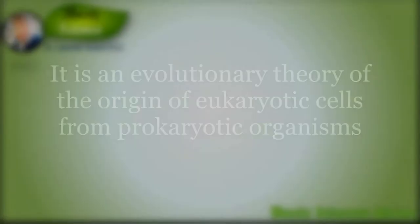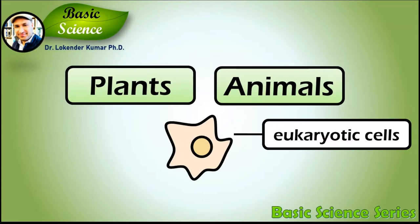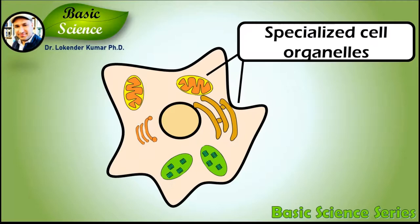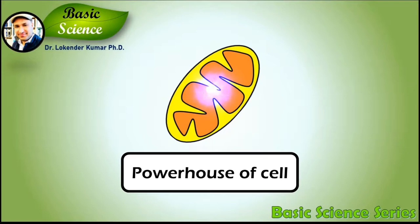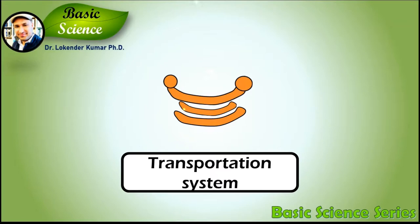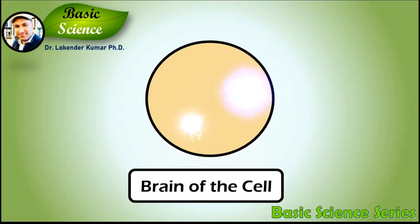All animals and plants are made up of eukaryotic cells. These cells are the basic unit of structure and function of any living entity. These cells have specialized organelles that perform various functions — like mitochondria, which is called the powerhouse of the cell because it generates a large amount of energy. Endoplasmic reticulum is called the protein synthesis machinery of the cell. Golgi bodies are the transportation system, and the nucleus is the brain of the cell because it contains all the genetic information.